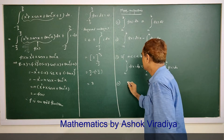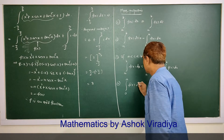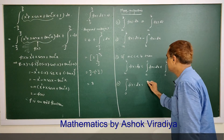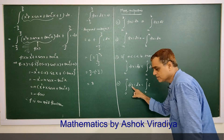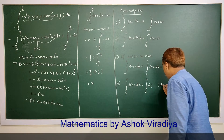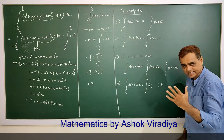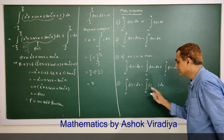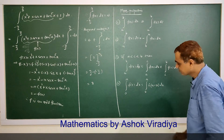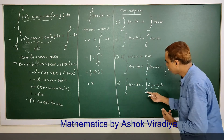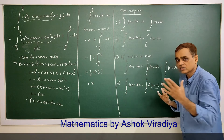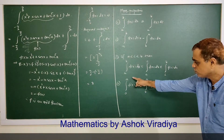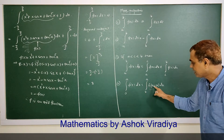Fourth property: if lower limit is 0 and upper limit is a, then the integral from 0 to a of f(x) dx equals the integral from 0 to a of f(a minus x) dx. If we replace x by a minus x, the function changes but the definite integral value remains the same over that interval. Remember this very important rule — it will be used most often.